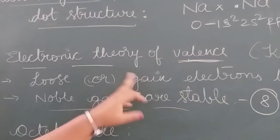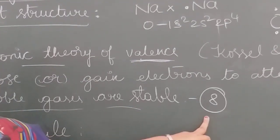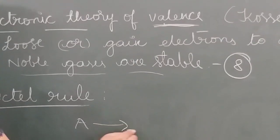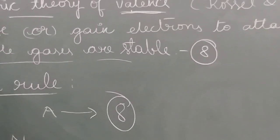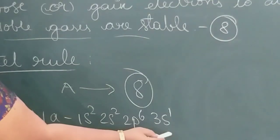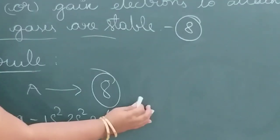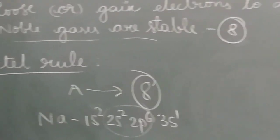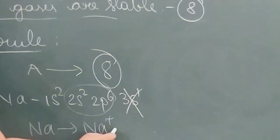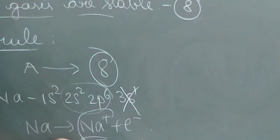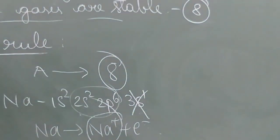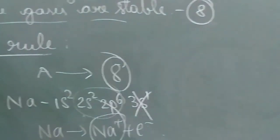The atoms trying to get 8 electrons in the valence shell is known as the octet rule. Atoms undergo chemical change to get 8 electrons in the valence shell. For example, sodium has configuration 1s2, 2s2, 2p6, 3s1 — it has 1 electron in the valence shell. If that electron is removed, it has 8 electrons in the valence shell. So it will lose this electron and change to Na+. When an atom loses electrons, it becomes a cation — a positively charged ion. In this way, sodium achieves 8 electrons in the valence shell.